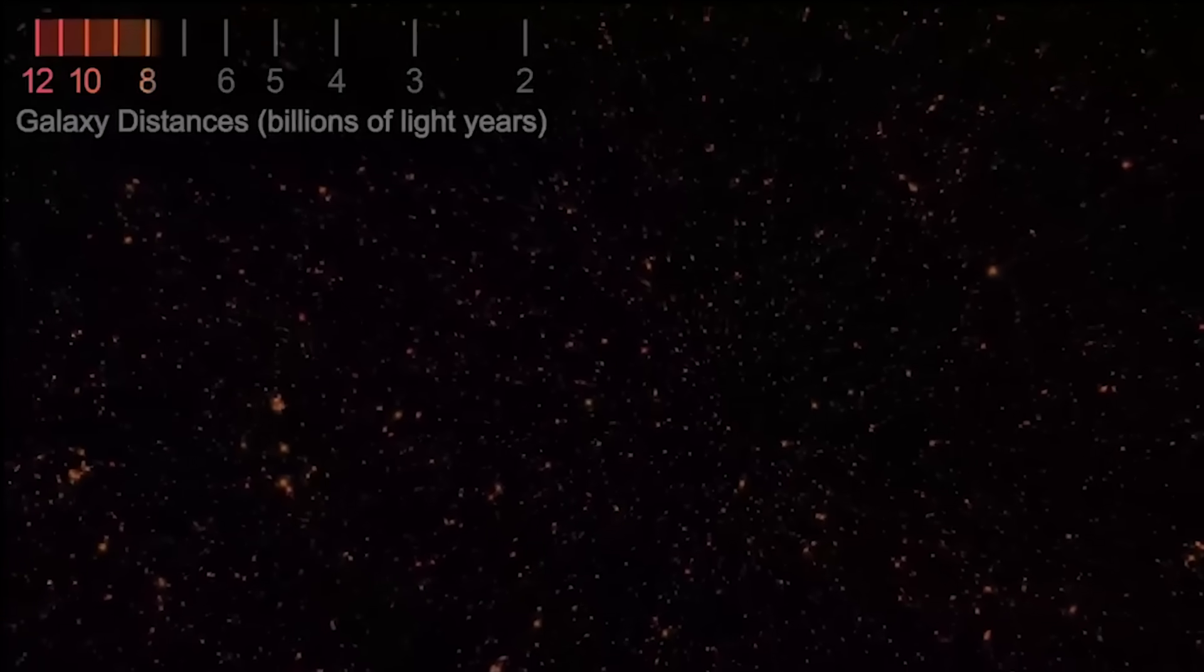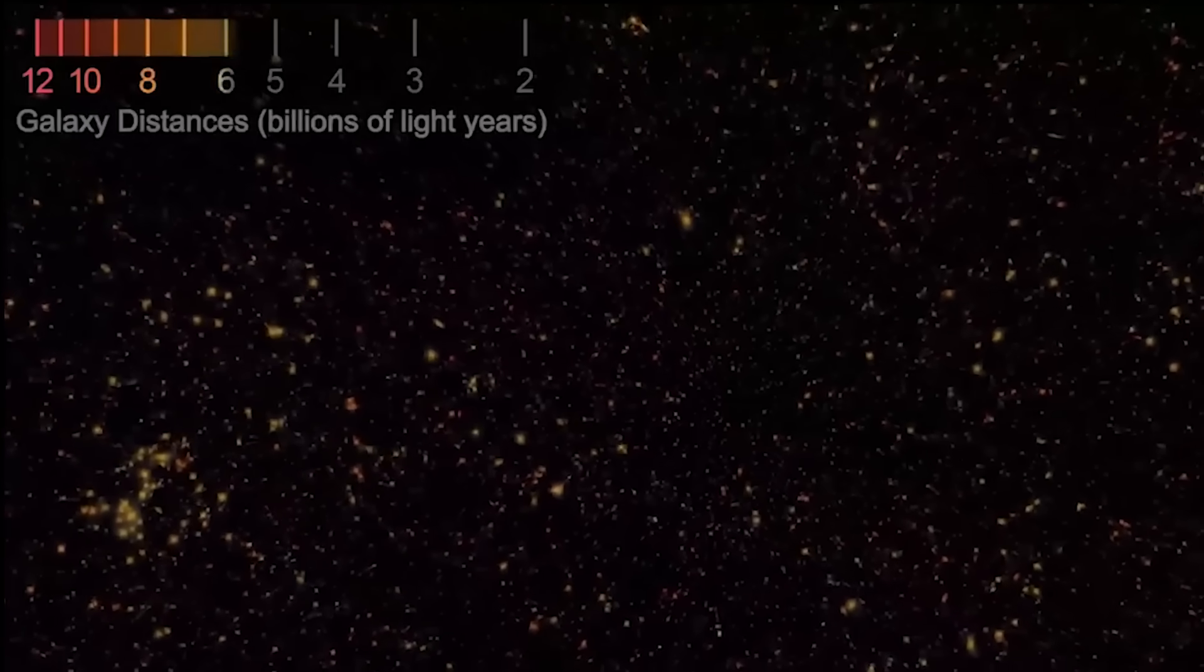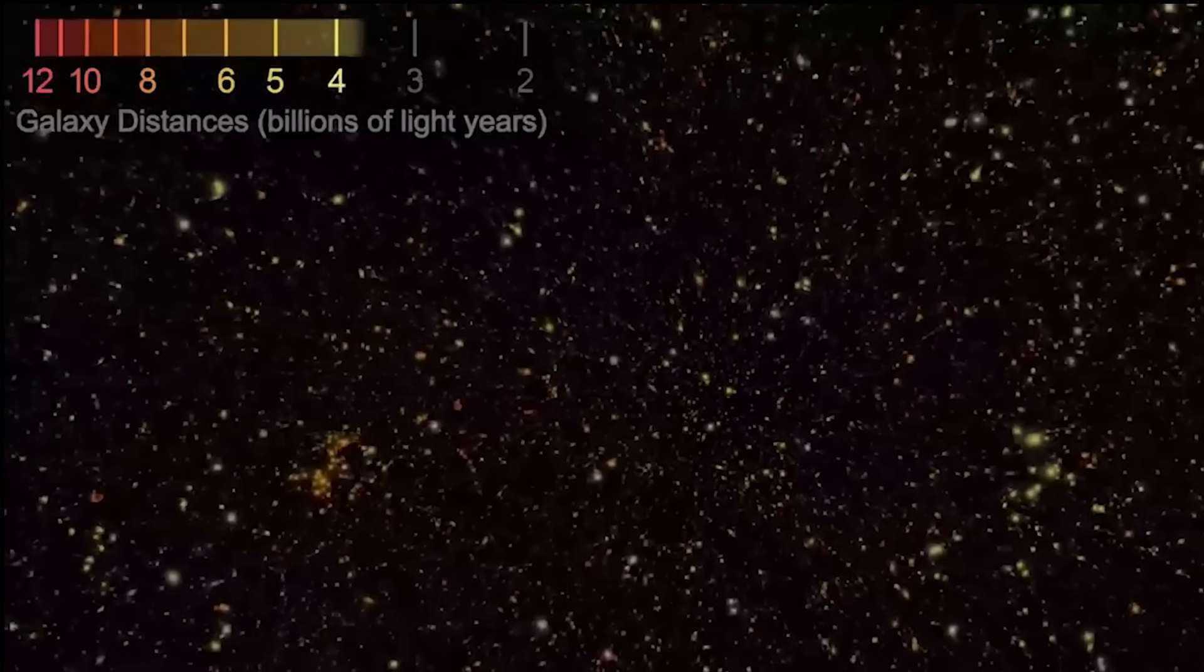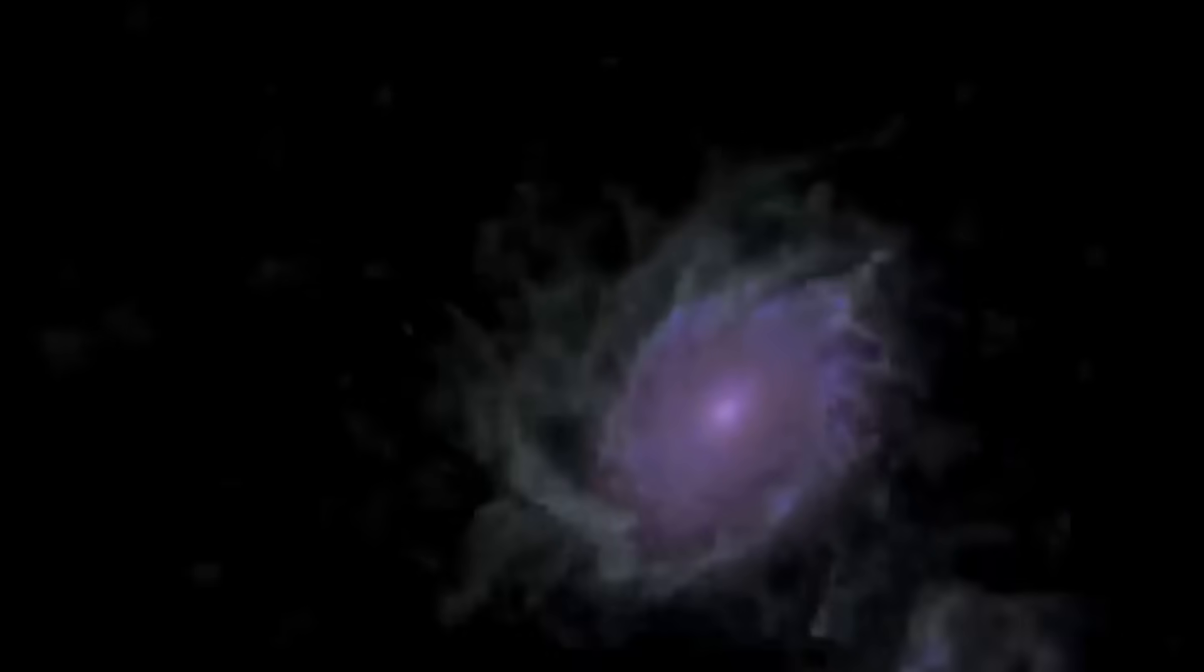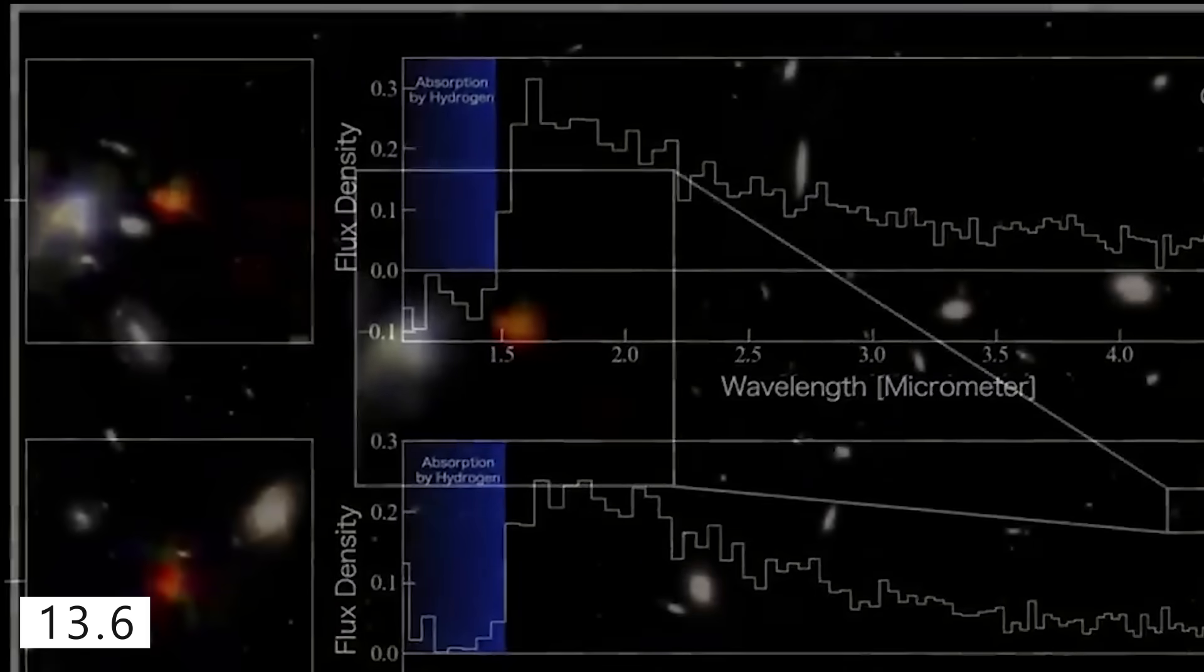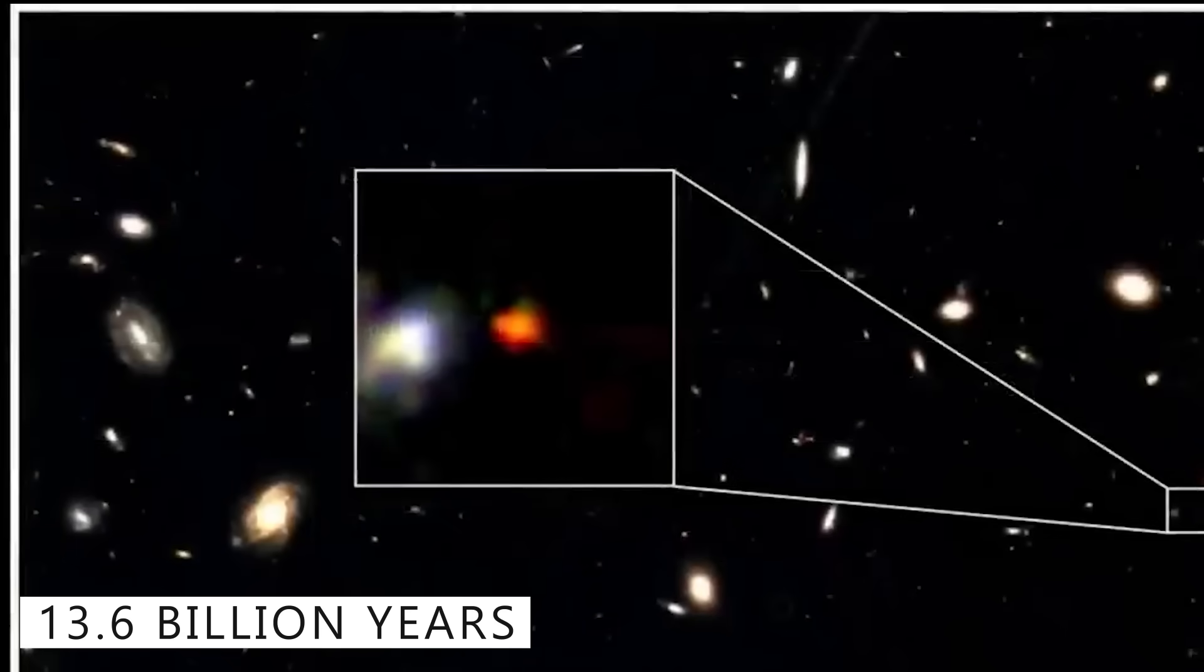When Webb peered deeper into space than ever before, it discovered 15 mysterious galaxies, tiny points of light from a time when, according to our current understanding, galaxies shouldn't even exist. Their light has been traveling for nearly 13.6 billion years.